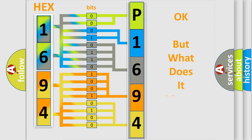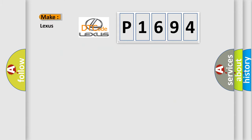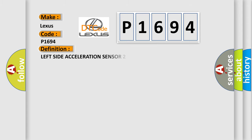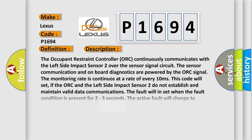The number itself does not make sense to us if we cannot assign information about what it actually expresses. So, what does the diagnostic trouble code P1694 interpret specifically for Lexus car manufacturers? The basic definition is: Left side acceleration sensor 2 missing message. And now here is a short description of this DTC code.